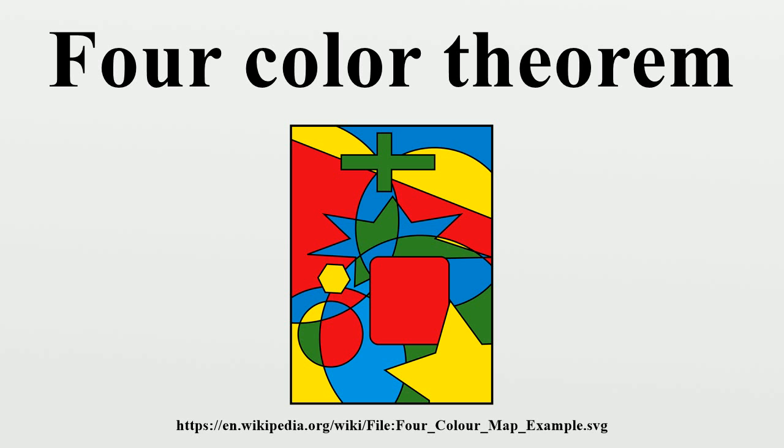This arises in the following way: We never need four colors in a neighborhood unless there be four counties, each of which has boundary lines in common with each of the other three. Such a thing cannot happen with four areas unless one or more of them be enclosed by the rest, and the color used for the enclosed county is thus set free to go on with.